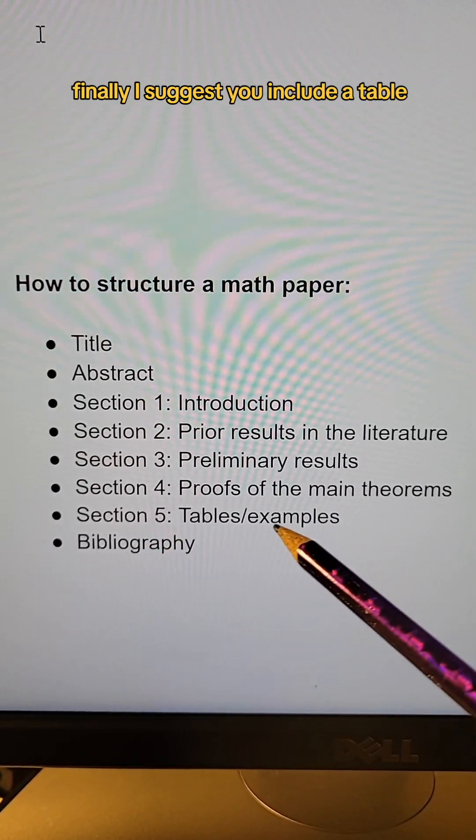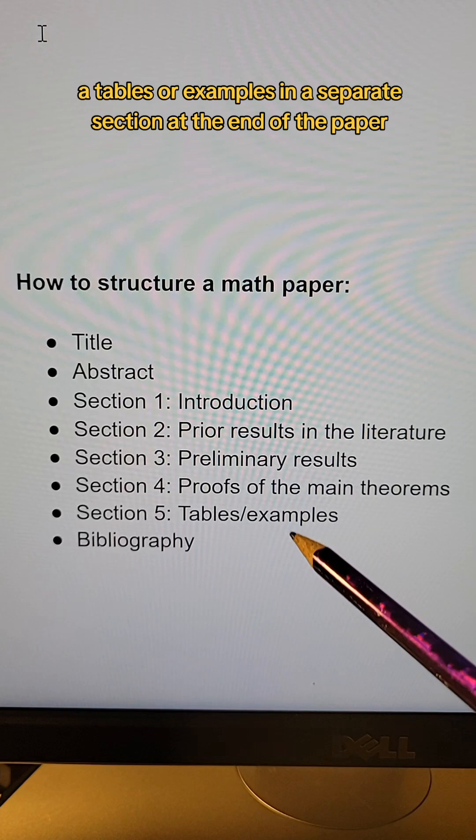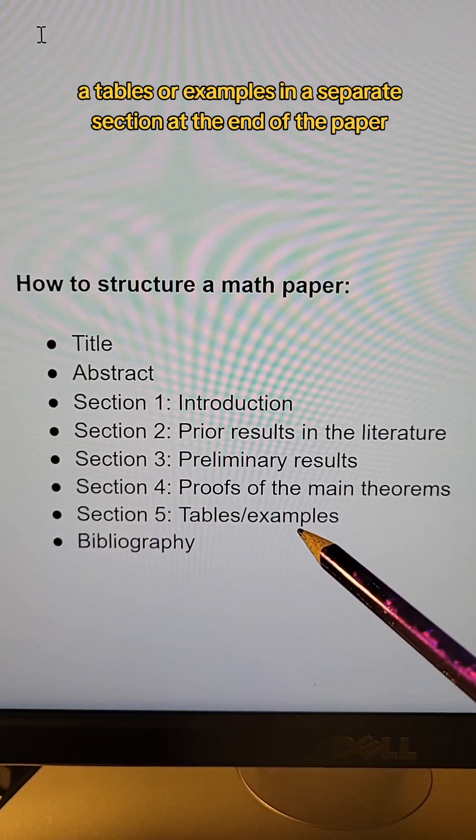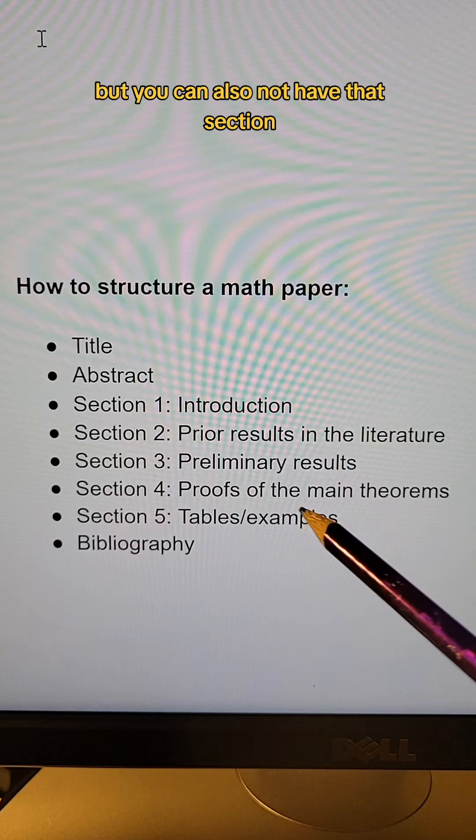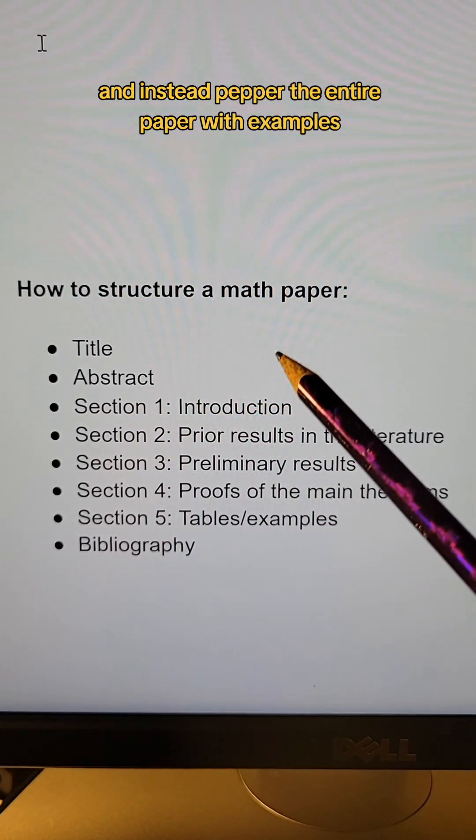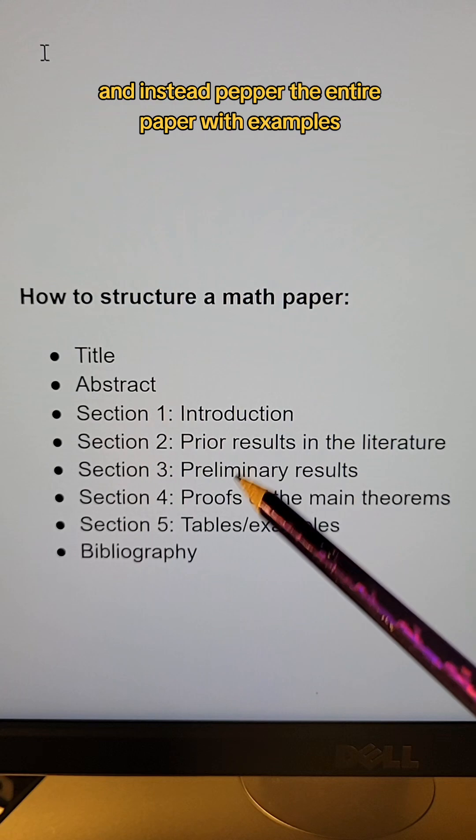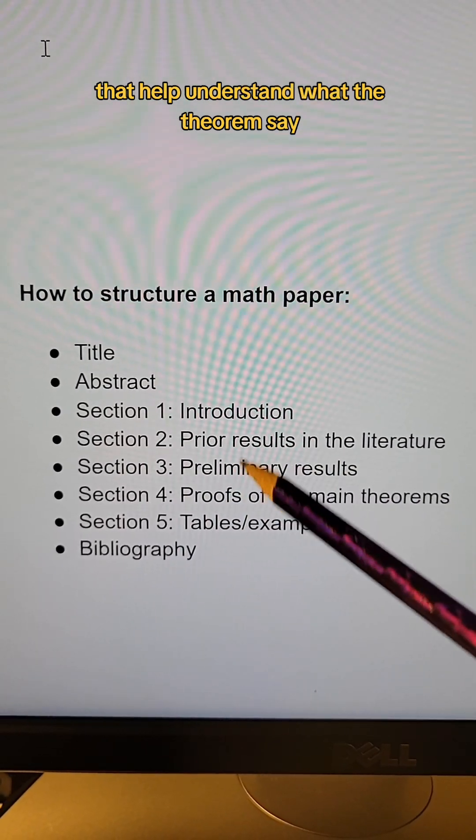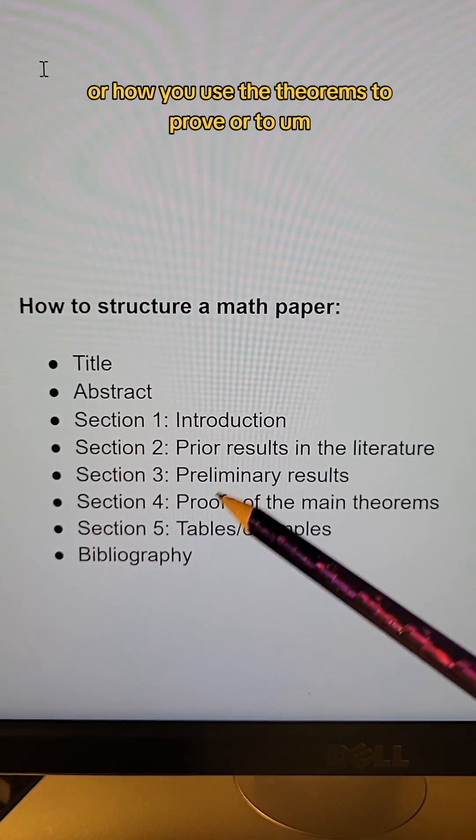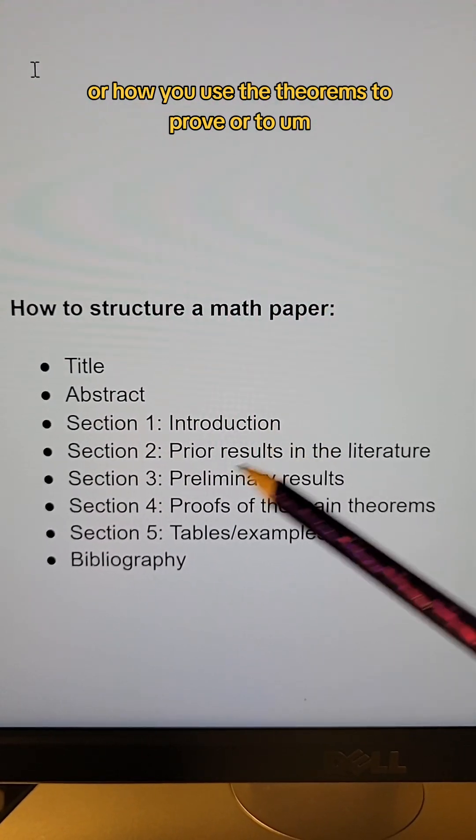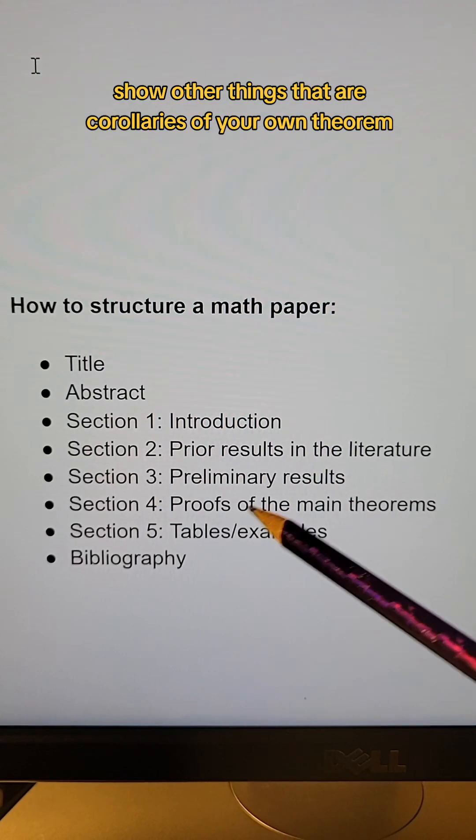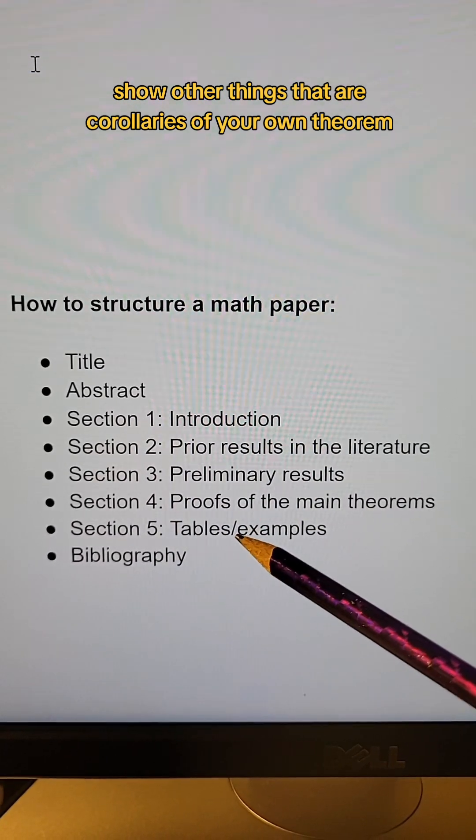Finally, I suggest you include tables or examples in a separate section at the end of the paper, but you can also not have that section and instead pepper the entire paper with examples that help understand what the theorems say or how you use the theorems to prove or to show other things that are corollaries of your own theorem.